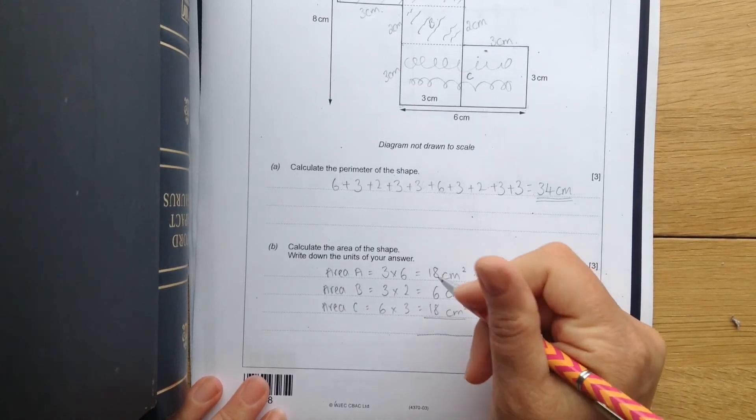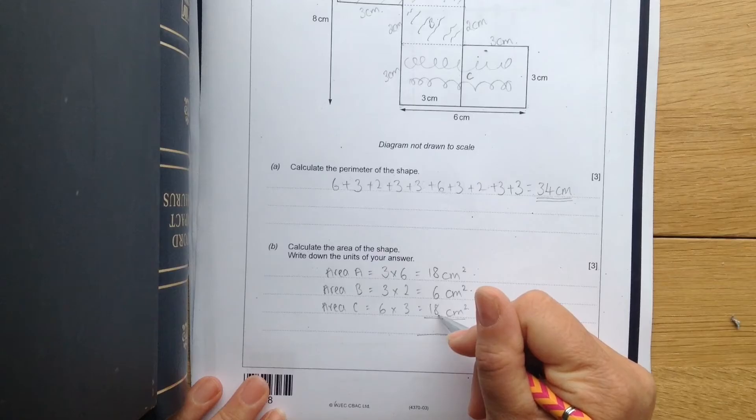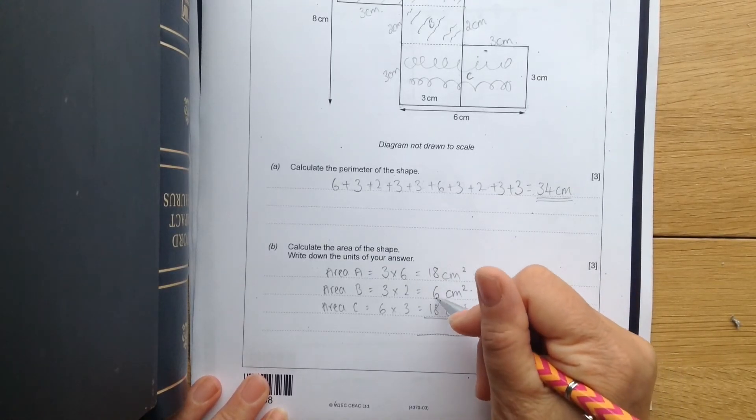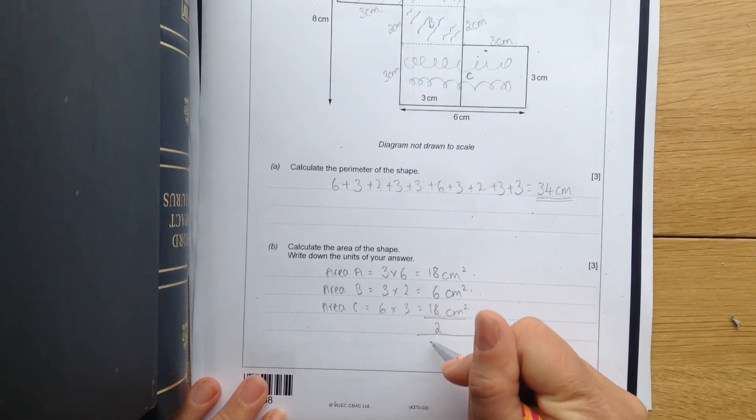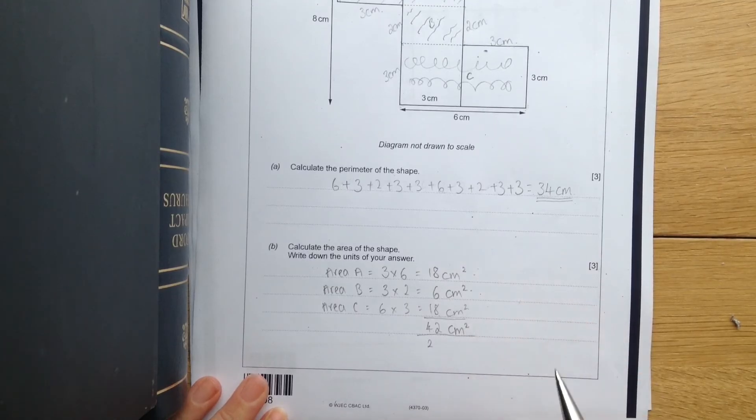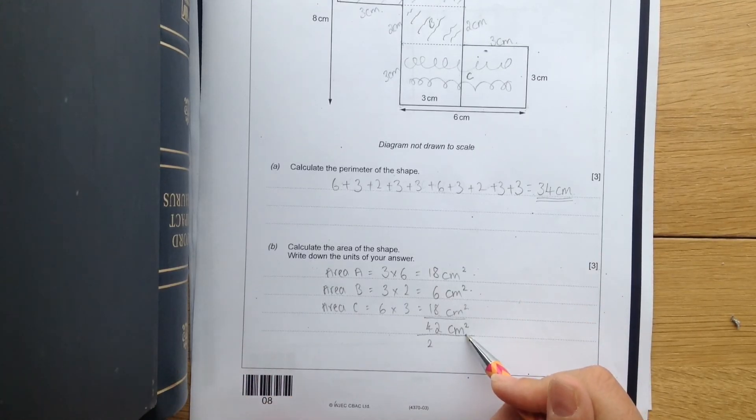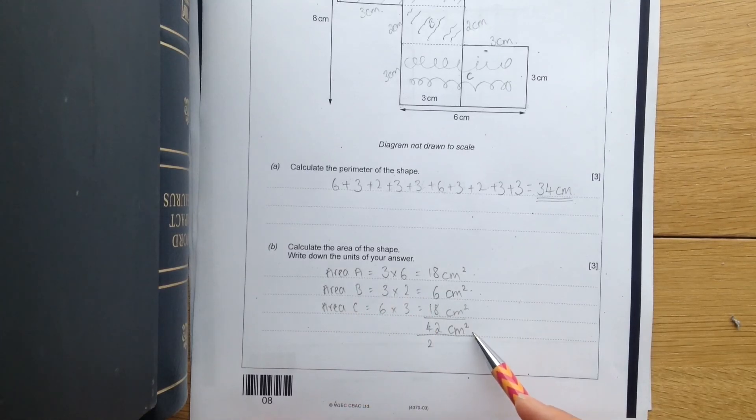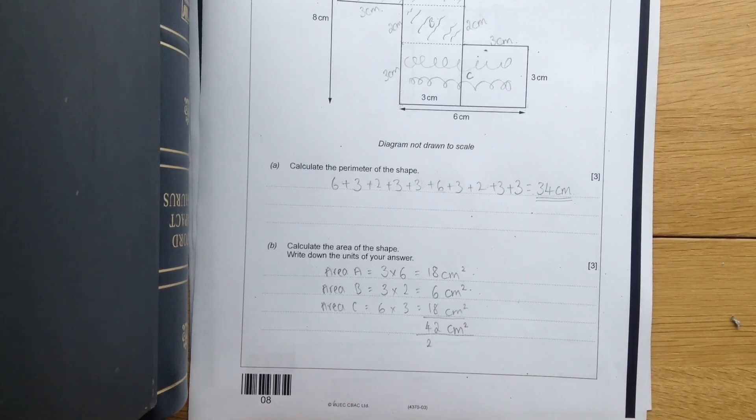Adding them together. 18 add 6 add 18. Well, 18 add 18 is 36. And the 6 is 42. So 42 centimeters squared. Don't forget, you need that centimeter squared. Because it says write down the unit of your answer. So that is going to be worth one mark in itself.